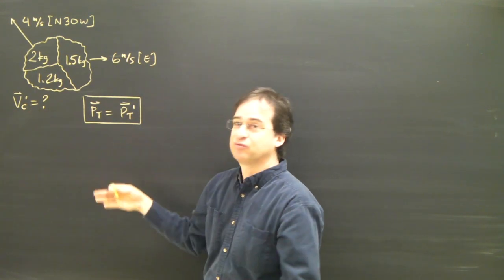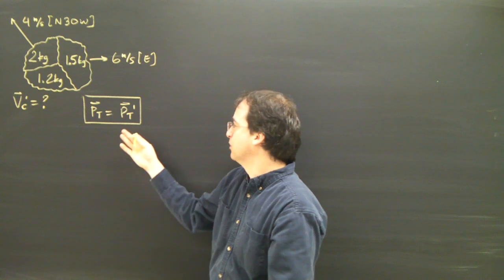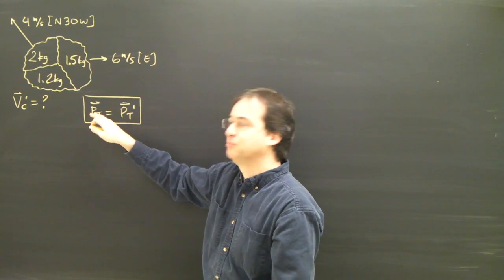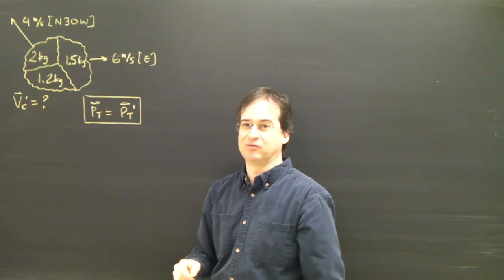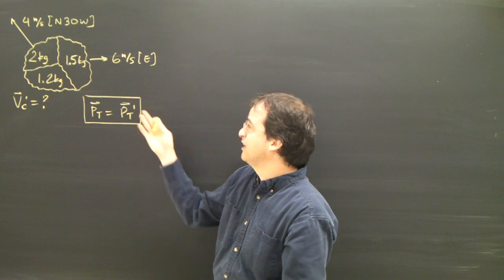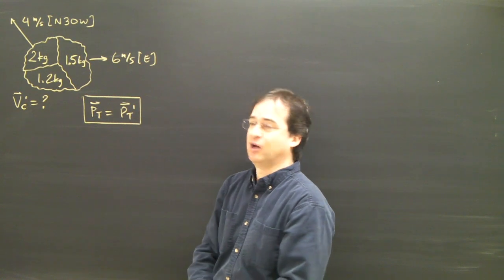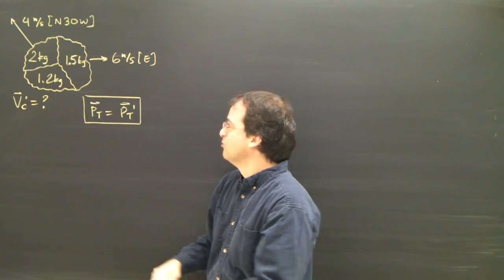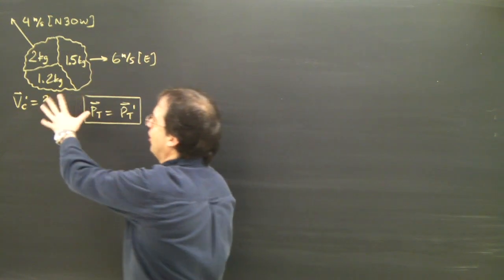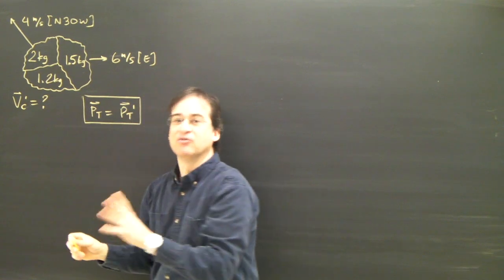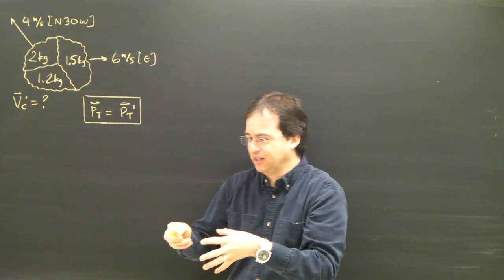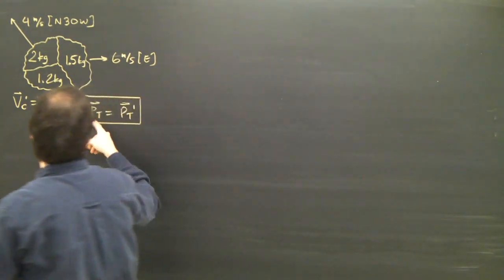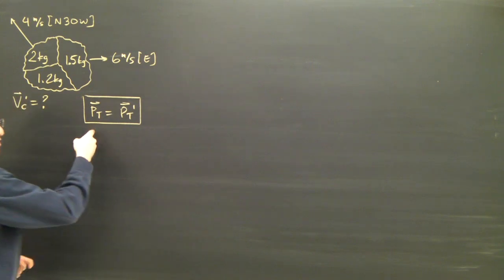We're going to use the same rules we use for all our momentum problems. We're going to say the momentum before is equal to the momentum afterwards. In this case, I've got three objects, so I've got to account for a, b, and c. The thing is, the object is not moving before — it's just sitting there and then it explodes — so I can say the momentum before is zero.